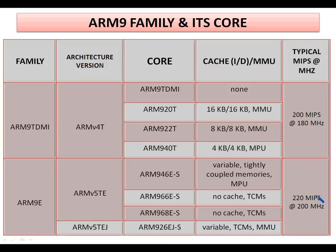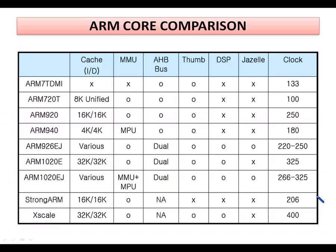This table shows the comparison of the ARM9 family core processor set with other family processor cores. Different parameters are compared such as amount of cache, MMU, AHB bus, Thumb, DSP instruction support, Jazelle technology support, and clock frequency. X markers denote the unavailability of a particular facility, and a small circle indicates availability of support.